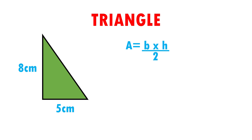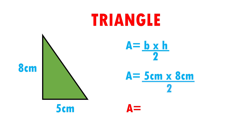We are going to substitute data — this means that instead of the letters, I'm going to put their value. Area is equal to the base, which is 5 cm, times the height, which is 8 cm, over 2. When performing the operations, area is equal to 5 times 8 is 40, divided by 2 is 20 cm squared. This means that our triangle can fit 20 squares of 1 cm per side.